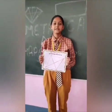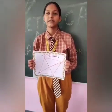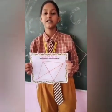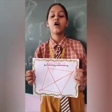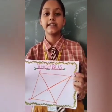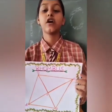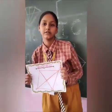My name is Nishma from class 8. My topic is rhombus. In a rhombus, all sides are equal. The diagonals of a rhombus bisect each other at right angles, and the diagonals bisect the angles of the rhombus.